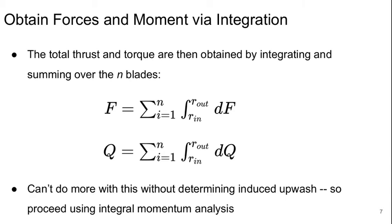So if we knew things about the airfoil sections and we somehow knew the induced angles of attack, we could use those expressions and we could come up with the overall forces and the moment just via integration along the radius. So the total thrust and the total torque would just be basically obtained by integrating from the inner radius to the outer radius and then summing over the number of blades.